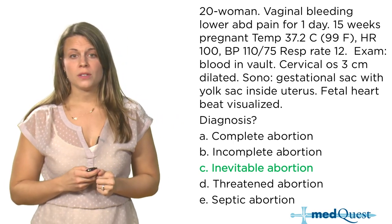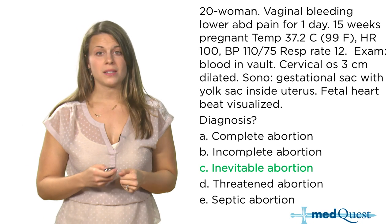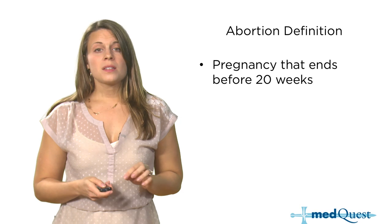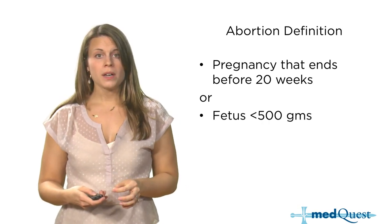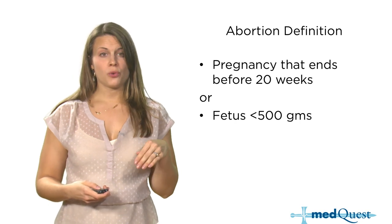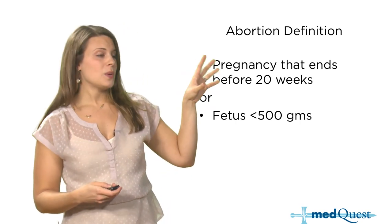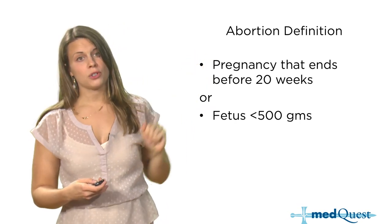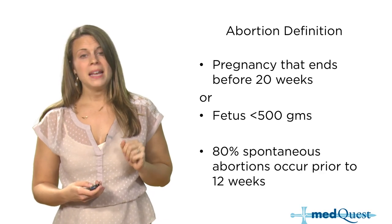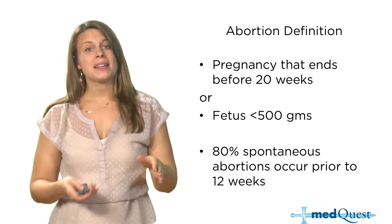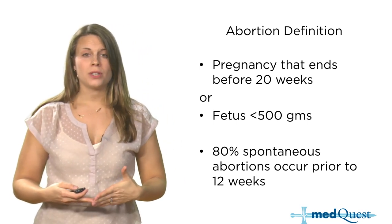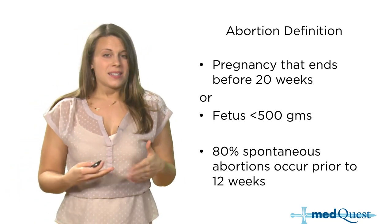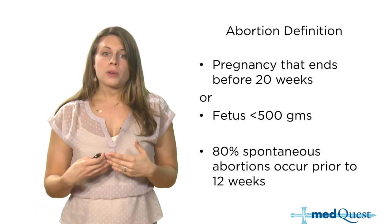Let's define abortion. This is a pregnancy that ends prior to 20 weeks, or a fetus less than 500 grams — the 20-week cutoff is the better definition for your purposes. Eighty percent of spontaneous abortions happen at less than 12 weeks, making it very unusual to have an abortion at 18 or 19 weeks.